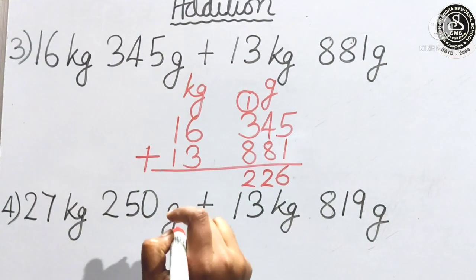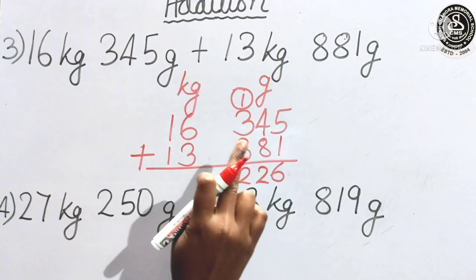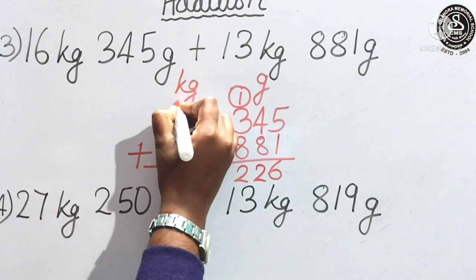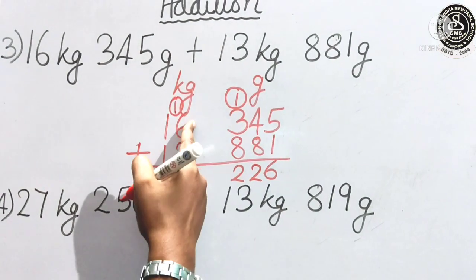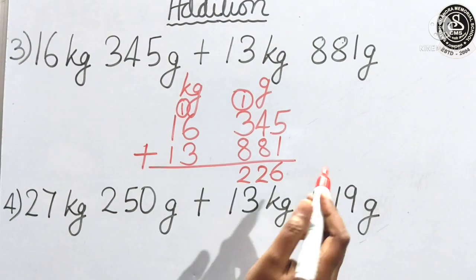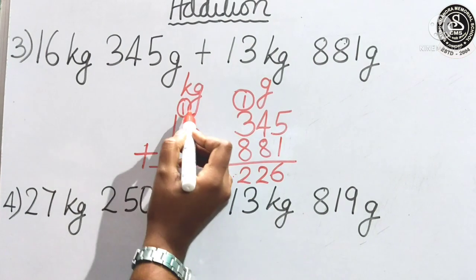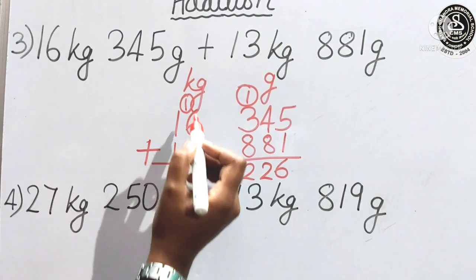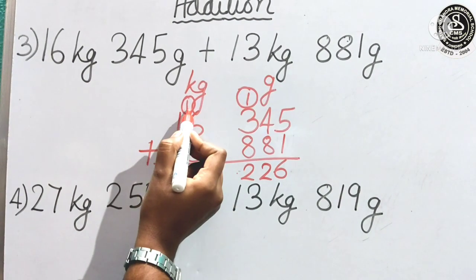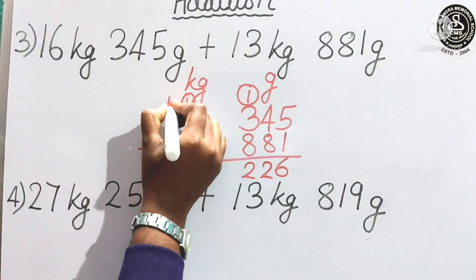Now, again we get 1. We will not write the number here. What carry we will get? That one we will bought here in the place of kilogram above the number 6. Again, I am repeating. What carry over? We will get here. We will brought to the kilogram place. Now, let us add 6 plus 3. 9. Carry 1. We will add. We will get 10. Again carry 1.